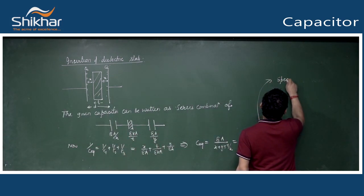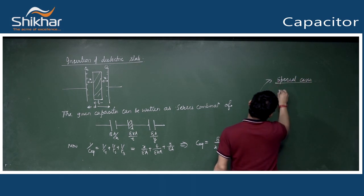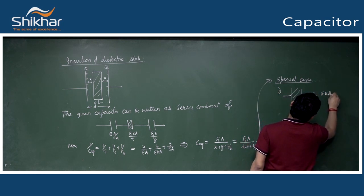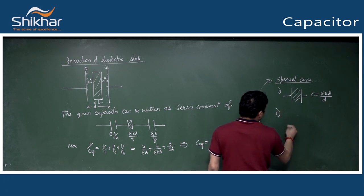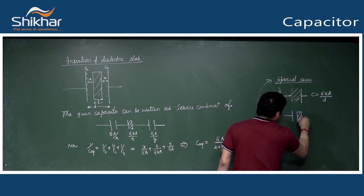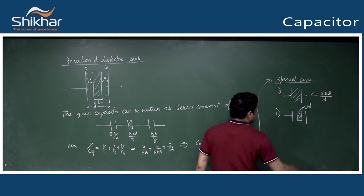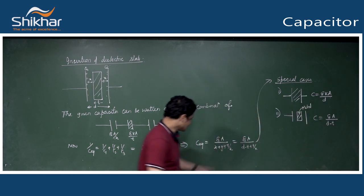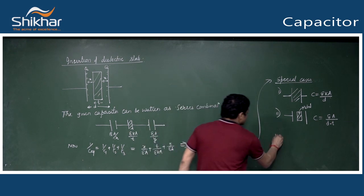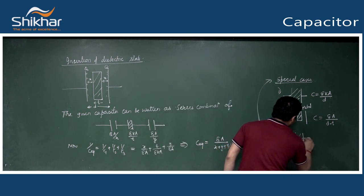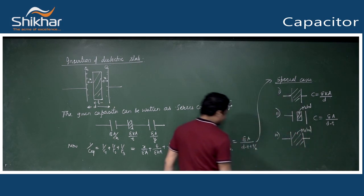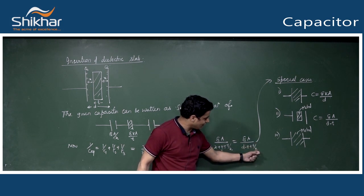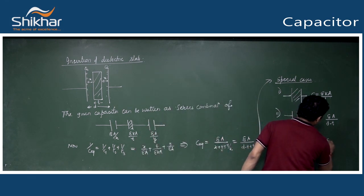Special cases: (1) If slab fills completely (t=d): C = ε₀KA/d. (2) If a metal slab of thickness t is inserted (K→∞): C = ε₀A/(d-t). (3) If metal fills completely (t=d, K→∞): C → infinity, meaning potential difference approaches zero.